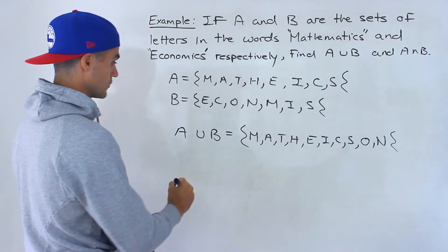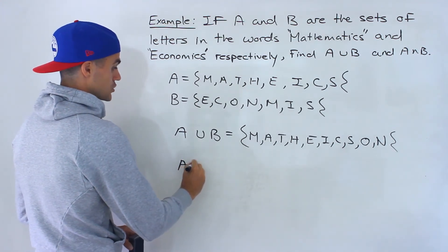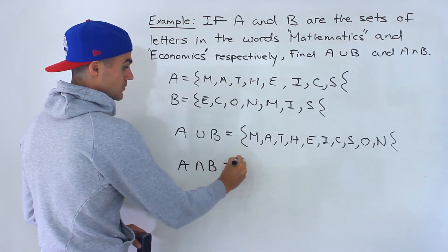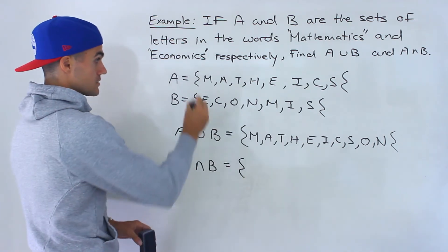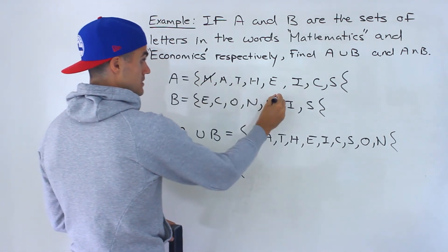So that's what the union set would be. Now the intersection, it's A and B so it has to be in both of them. So notice the M is in both.